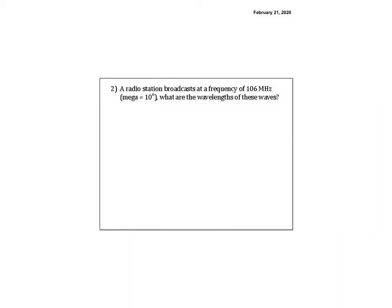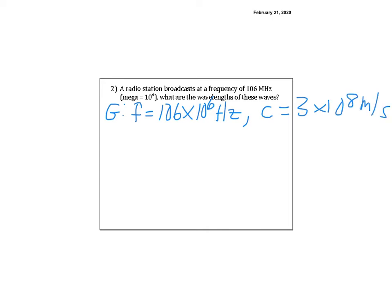A radio station broadcasts at a frequency of 106 megahertz, where mega is 10 to the 6th. What is the wavelength of these waves? Given: F equals 106 times 10 to the 6th Hertz. Even radio waves are not sound waves — they are electromagnetic waves — so C equals 3 times 10 to the 8th meters per second. The unknown is lambda.